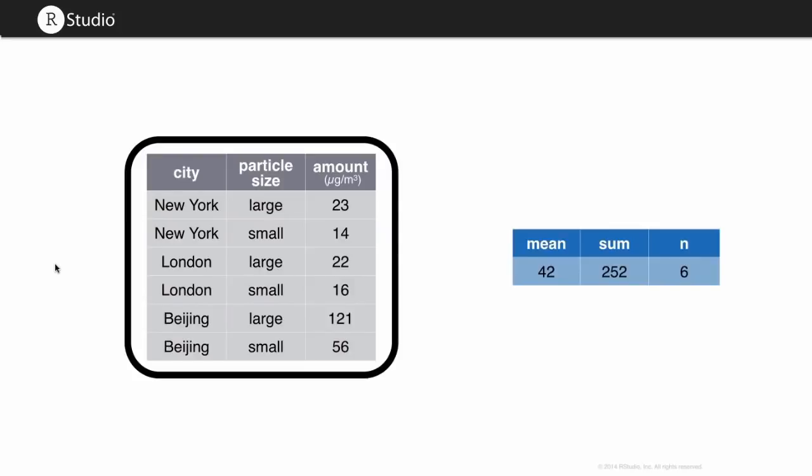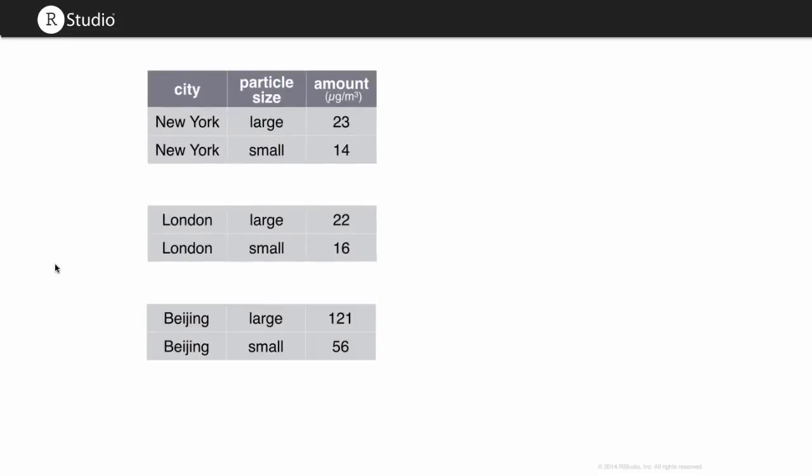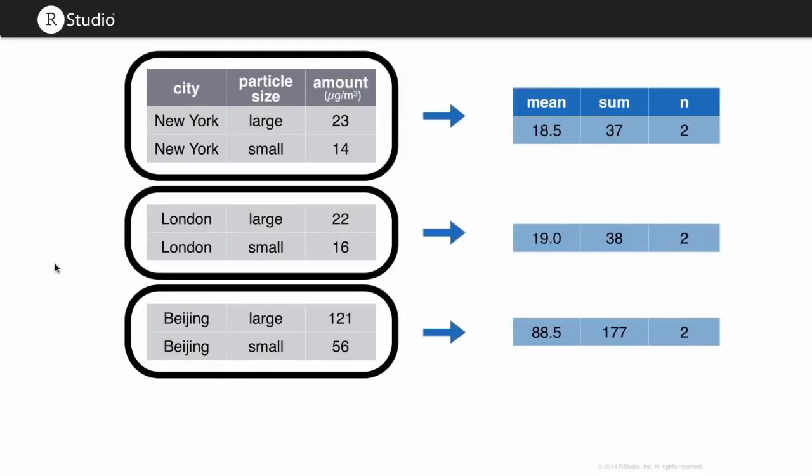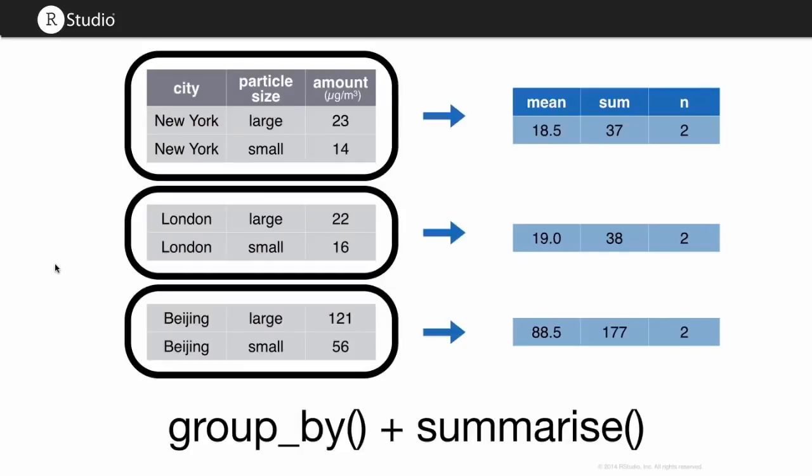So if we can make observations on an entire data set, well, then we can also make observations on subsets of a data set. We can make an observation on six rows. Why not make an observation on two rows, or three observations on two rows? And if we did that, then we could have means, sums, and ns that are keyed into, in this case, different cities. You know, the mean amount for New York, the mean amount for London, the mean amount for Beijing. And you can do this sort of thing, this group_by operation, by combining the group_by function, which comes from dplyr, with the summarize function that comes from dplyr. Here's how it works.